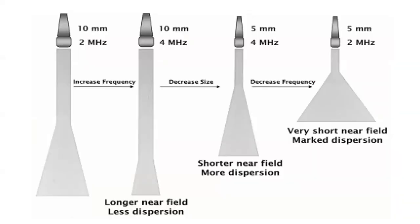For example, if we use a 10 mm 2 MHz probe and increase the frequency from 2 MHz to 4 MHz, we can reach a longer near field and less dispersion. But if we decrease the size of the probe, we will reach a shorter near field but more dispersion. And if we decrease the frequency of the same smaller probe, we can reach a very short near field.